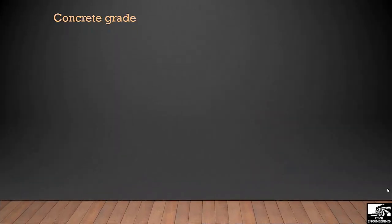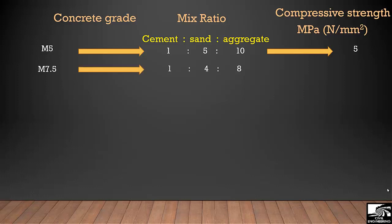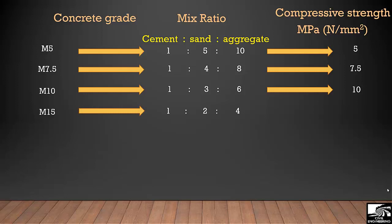We have different grades of concrete and each grade of concrete has its own mix ratio. Starting with M5 grade of concrete, it has the ratio of 1 ratio 5 ratio 10, where 1 shows cement quantity, 5 shows sand, and 10 represents aggregate quantity. It has a compressive strength of 5 megapascal. Similarly, M7.5 has a mix ratio of 1 ratio 4 ratio 8 and has a compressive strength of 7.5 megapascal. M10 has a mix ratio of 1 ratio 3 ratio 6 and compressive strength of 10 megapascal. M15 has a mix ratio of 1 ratio 2 ratio 4 and compressive strength of 15 megapascal, and so on.